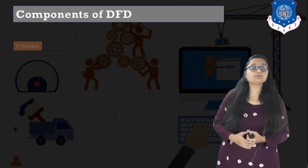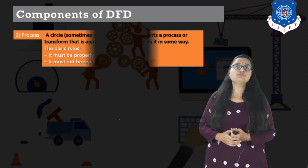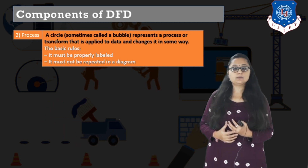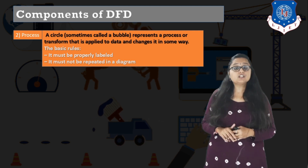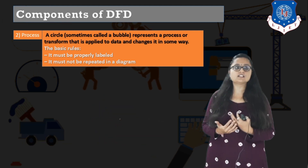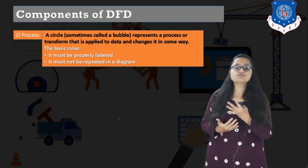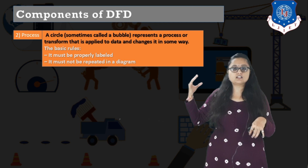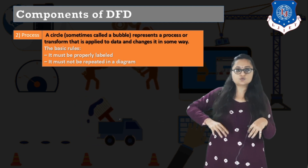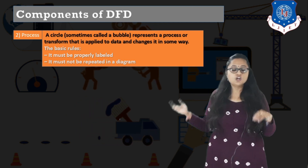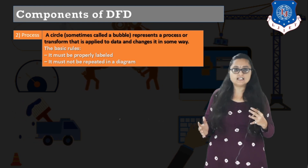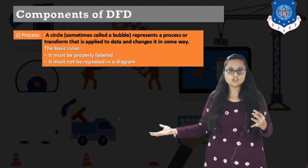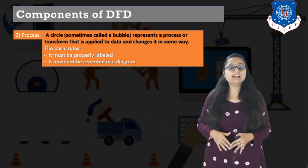The next component of DFD is a process, depicted by a circle or bubble. It represents a function that transforms input data and produces manipulated output data to be given to some external entity or another component.